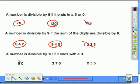A number is divisible by 10 if it ends with a 0. 60 is divisible by 10 because it ends in a 0. 370 is divisible by 10 because it ends in a 0. And 255 is not divisible by 10 because it does not end in a 0.